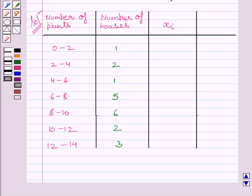Let us recall that class mark is equal to upper class limit plus lower class limit upon 2. So, 2 plus 0 upon 2 is equal to 1. Similarly, 4 plus 2 upon 2 is equal to 3. Here also, midpoint of this interval is equal to 5. Similarly, 6 plus 8 upon 2 is equal to 7. Here, 10 plus 8 upon 2 is equal to 9. Here, midpoint of this interval is 11. Similarly, midpoint of this interval is 13.